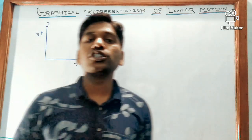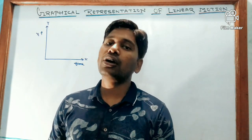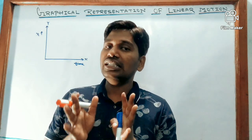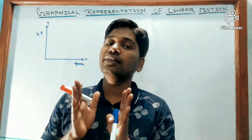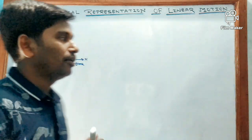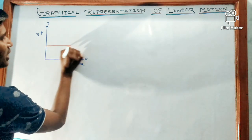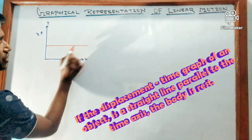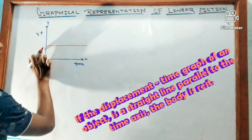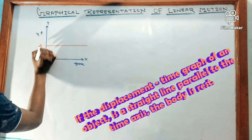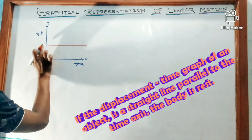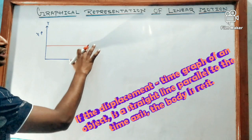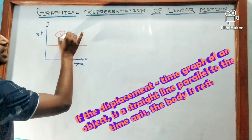If a body does not change its position, it means the body is at rest. We can represent this by a straight line parallel to the time axis. The time is changing but displacement is not changing — for example, the body stays at 10 meters regardless of time. This means the body is at rest.